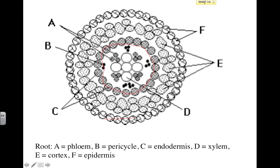The same thing happens in the epidermis. The nutrients — nitrogen, phosphorus, salts, and other things that might be pulled into the plant — are going to be transported by active transport, and then the water is going to follow by passive transport, or just osmosis basically. E on here is going to be the cortex, where you have storage of sugar, and it's also where water is moving into the vascular cylinder.